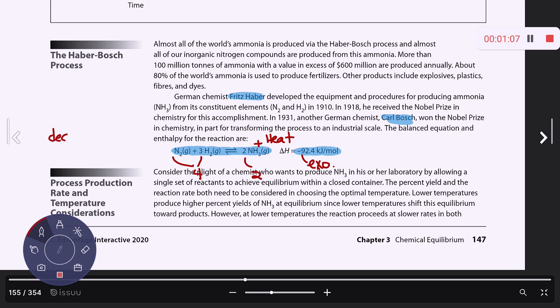You want to decrease the temperature because if you remove some heat, which is a product in an exothermic reaction, it will cause you to shift to the right to bring some of that heat back.